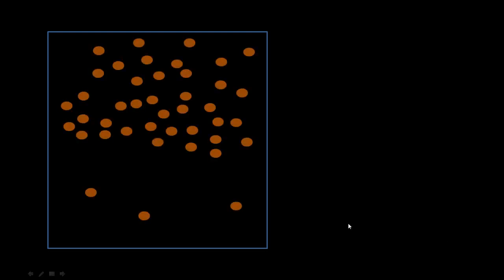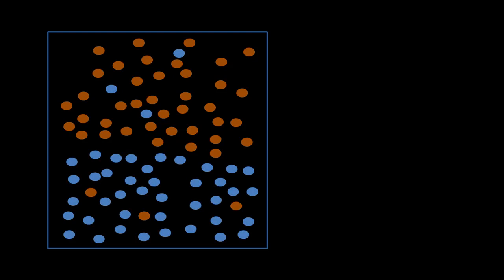Let us quickly recap what we did with k-nearest neighbors for classification. We have a bunch of households in a neighborhood — some Republican and some Democratic. We have two cases, households A and B, whose political affiliation we do not know, and we are trying to use the k-nearest neighbors technique to find that out. Based on the general layout, the top region is predominantly Republican and the bottom region predominantly Democratic, so A is more likely Republican and B more likely Democratic.